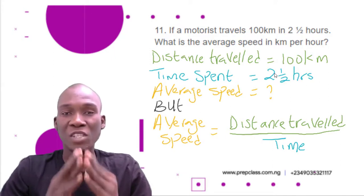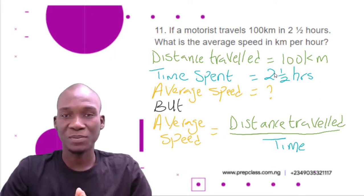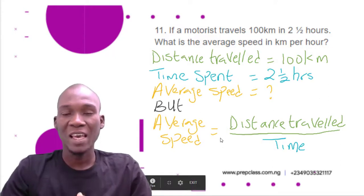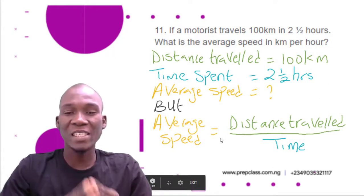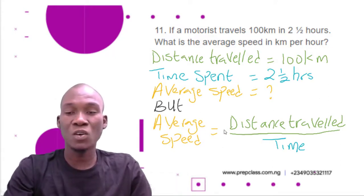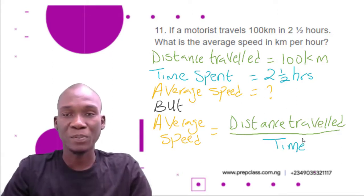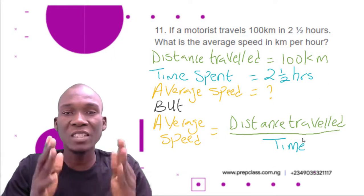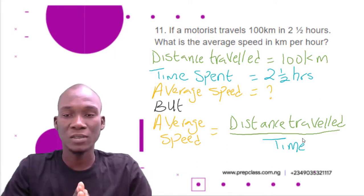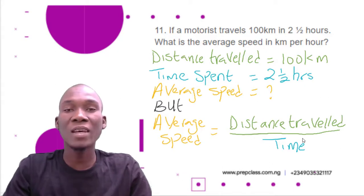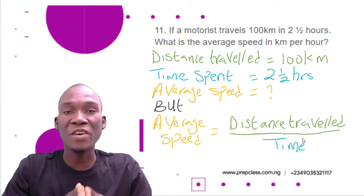Now we have to calculate the average speed. There is a formula for average speed and the formula is: average speed equals distance traveled divided by time. In this question we already have the distance traveled and we have the time spent, so using this information we can calculate the average speed.